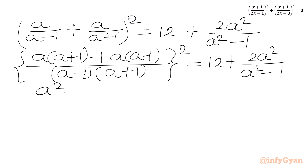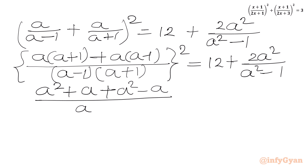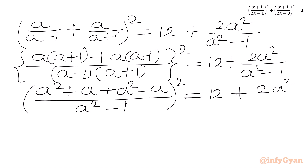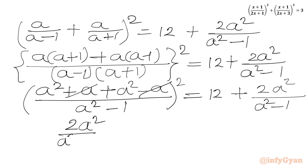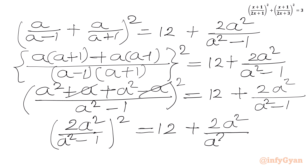Expanding the numerator: a²+a + a²−a = 2a², and the denominator is a²−1. The +a and −a cancel, giving us (2a²/(a²−1))² on the LHS. We then move all terms to the LHS.